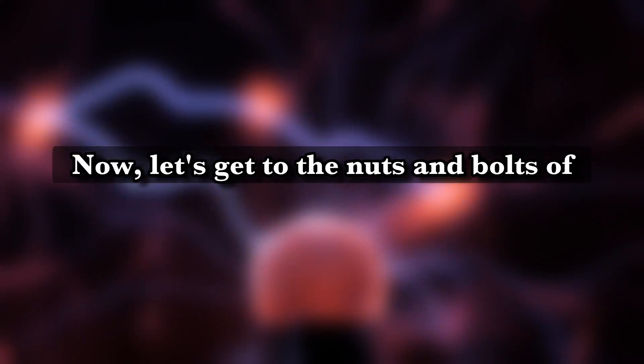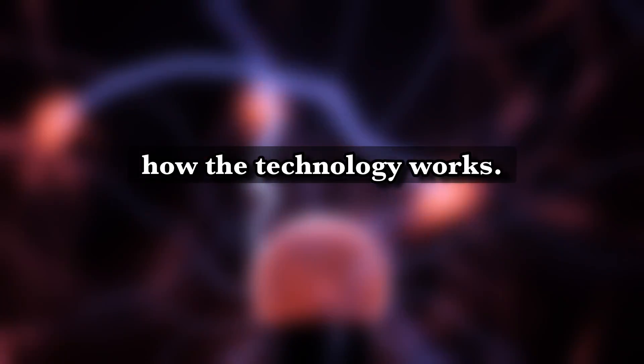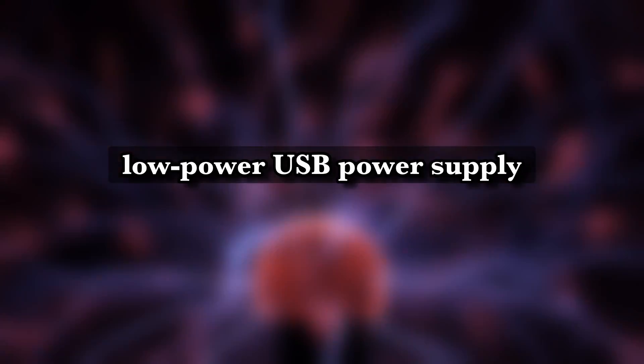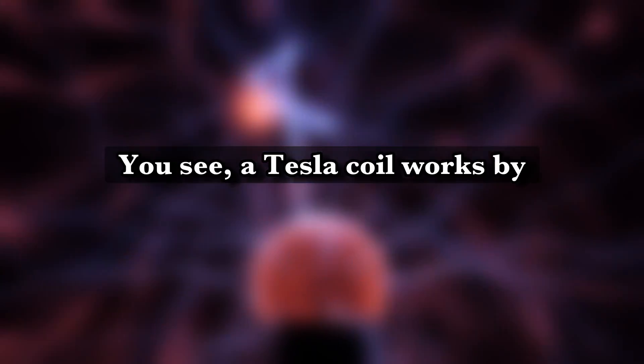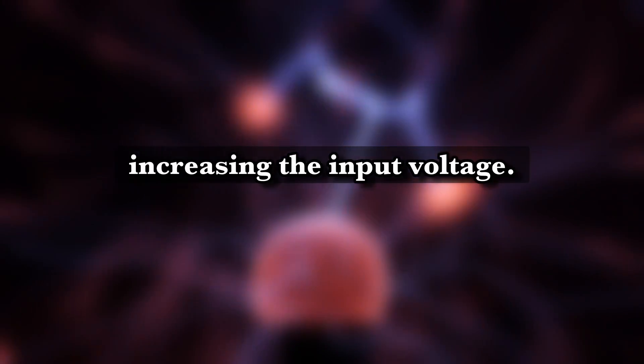Now, let's get to the nuts and bolts of how the technology works. Let's start with the heart of the plasma ball. The Tesla coil. This section of the podcast also explains how the seemingly low power USB power supply is able to create such a spectacular phenomenon. You see, a Tesla coil works by dramatically increasing the input voltage.